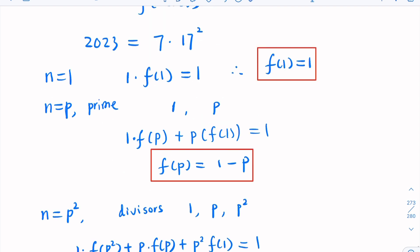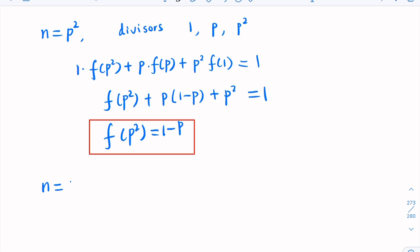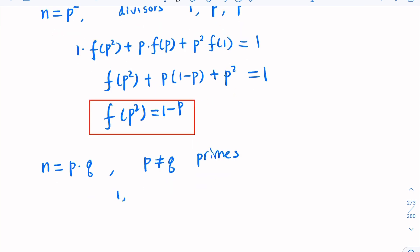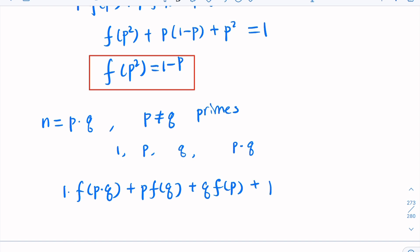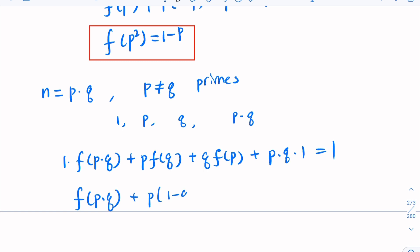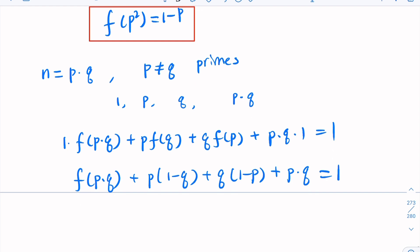For 2023, one divisor is 7×17, so we need the case n = pq where p and q are different primes. The divisors are 1, p, q, pq. Plugging in: f(pq) + p·f(q) + q·f(p) + pq·f(1) = 1. Substituting known values gives f(pq) = 1 − p − q + pq = (1−p)(1−q).